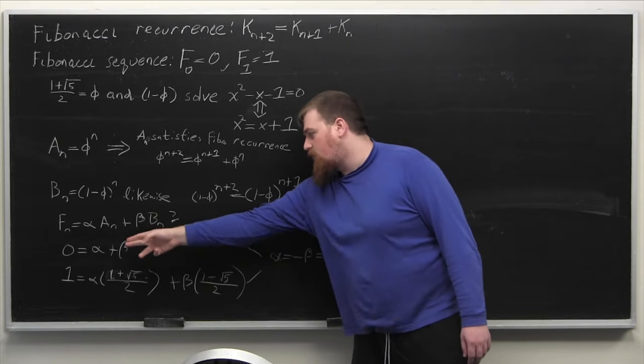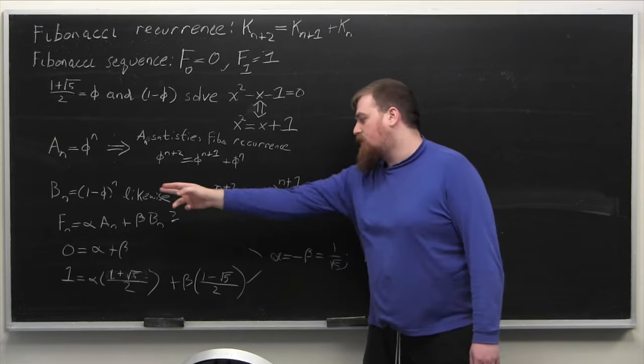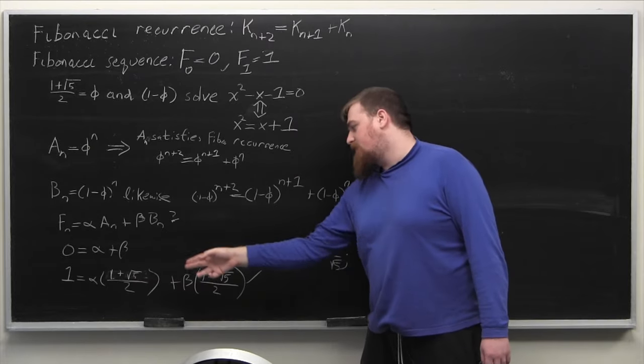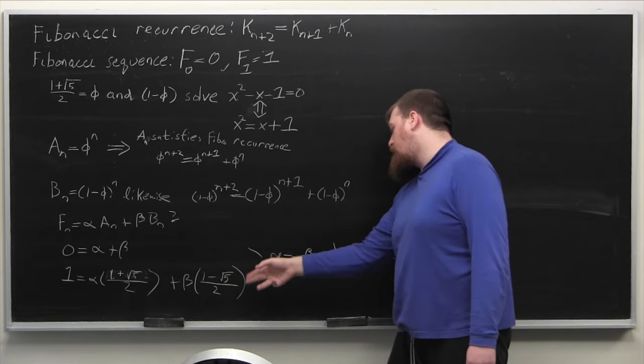Setting n equals 0 gives us 0 equals alpha plus beta, and setting n equals 1 gives us 1 equals alpha times phi plus beta times 1 minus phi.